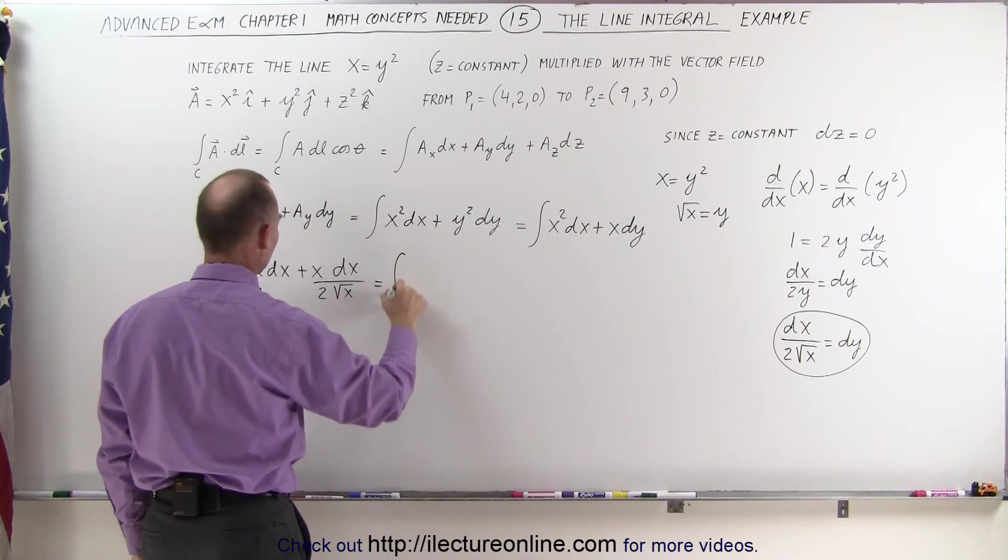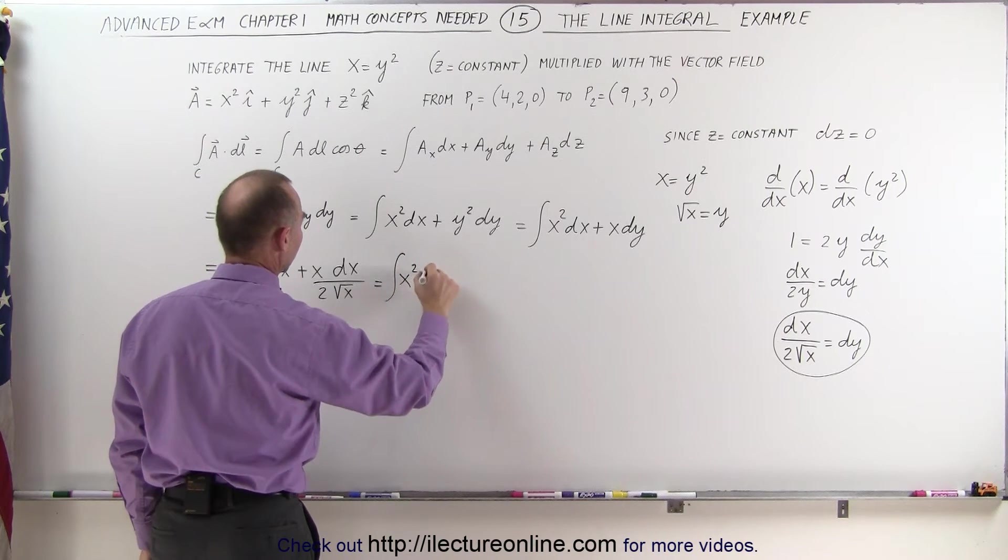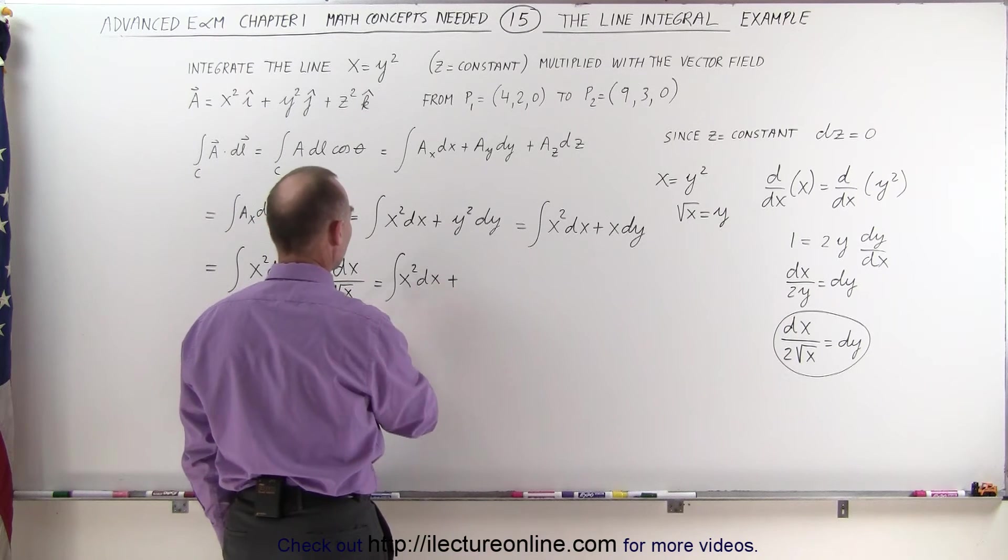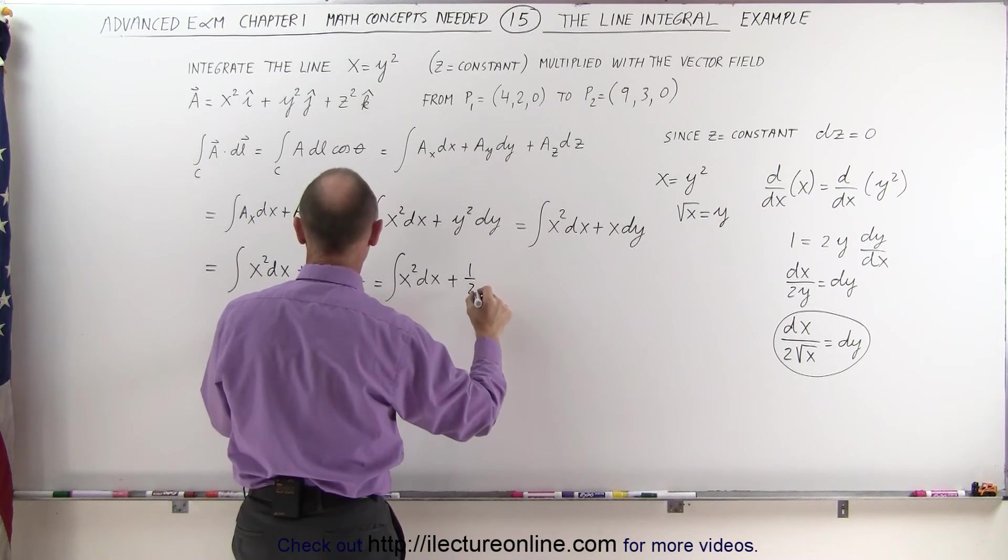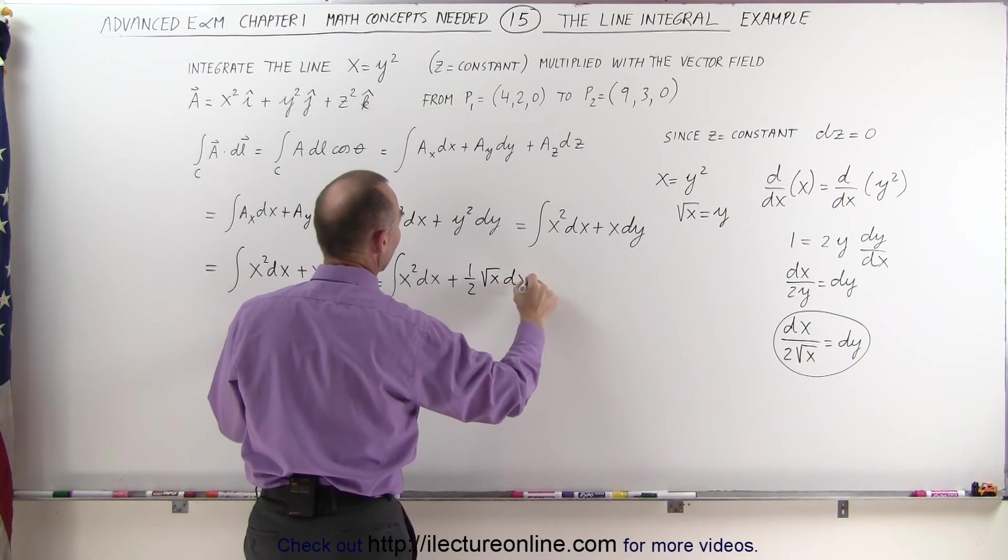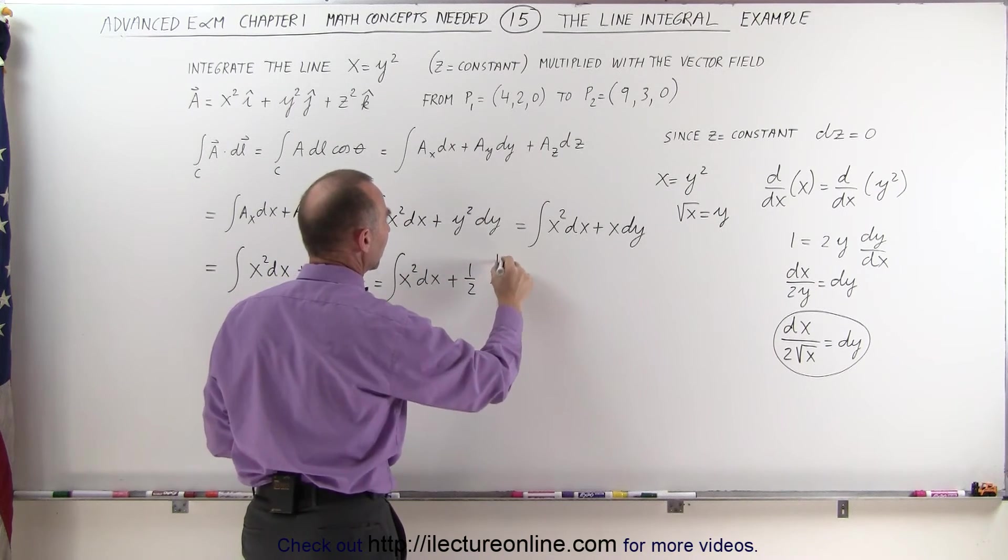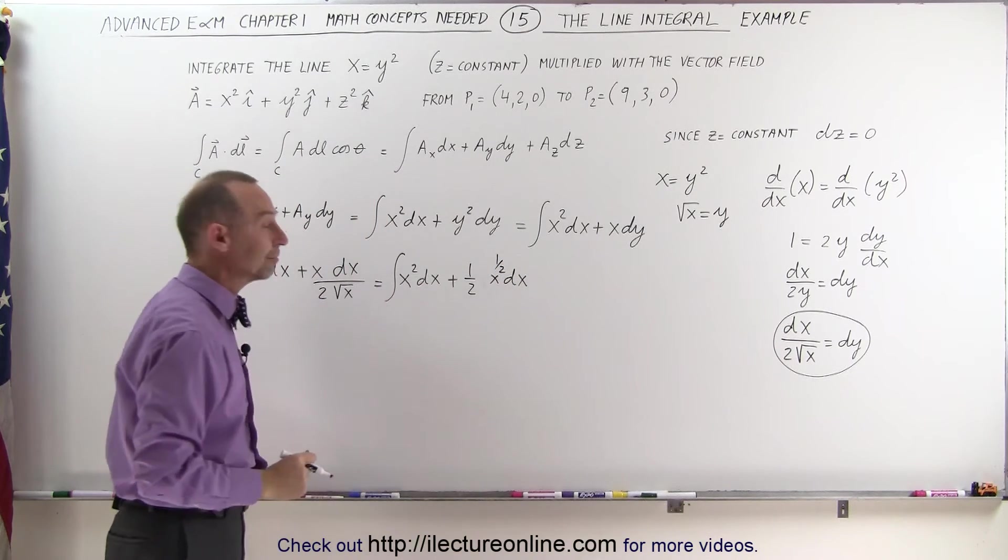And simplifying this even more, we can say this equals the integral of x squared dx plus x divided by the square root of x. We have the one-half, still one-half times the square root of x times dx, or I could simply have said x to the one-half power, which may be a little bit easier to integrate when we have it in that form.